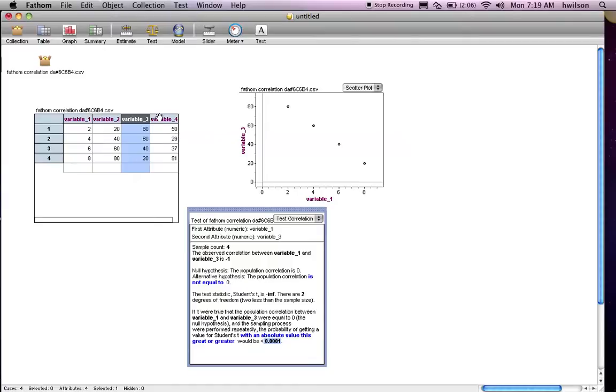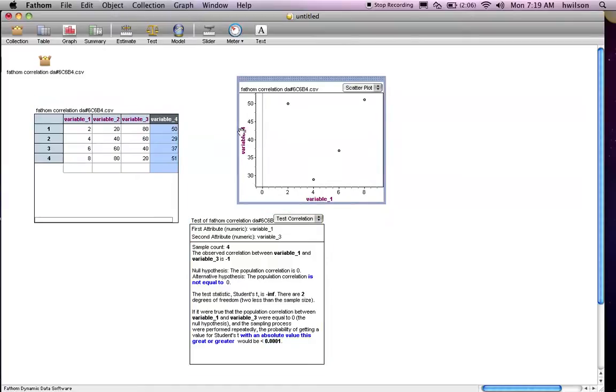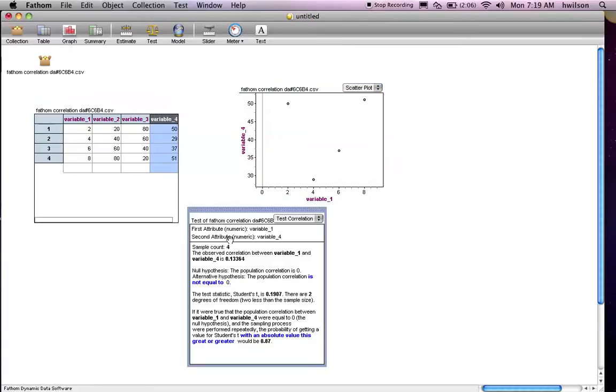Now let's look at no correlation, or very low correlation. Let's drag variable 4 into the test. And notice this correlation value is very small, close to 0, 0.13364. And so it doesn't appear that this data is correlated. In fact, if we were to randomly generate the data, we expect to see this data at a much higher probability. In fact, 0.87. So 87% of the time, we would get this data if the two variables were not correlated. And in fact, they are not correlated, so that makes perfect sense.